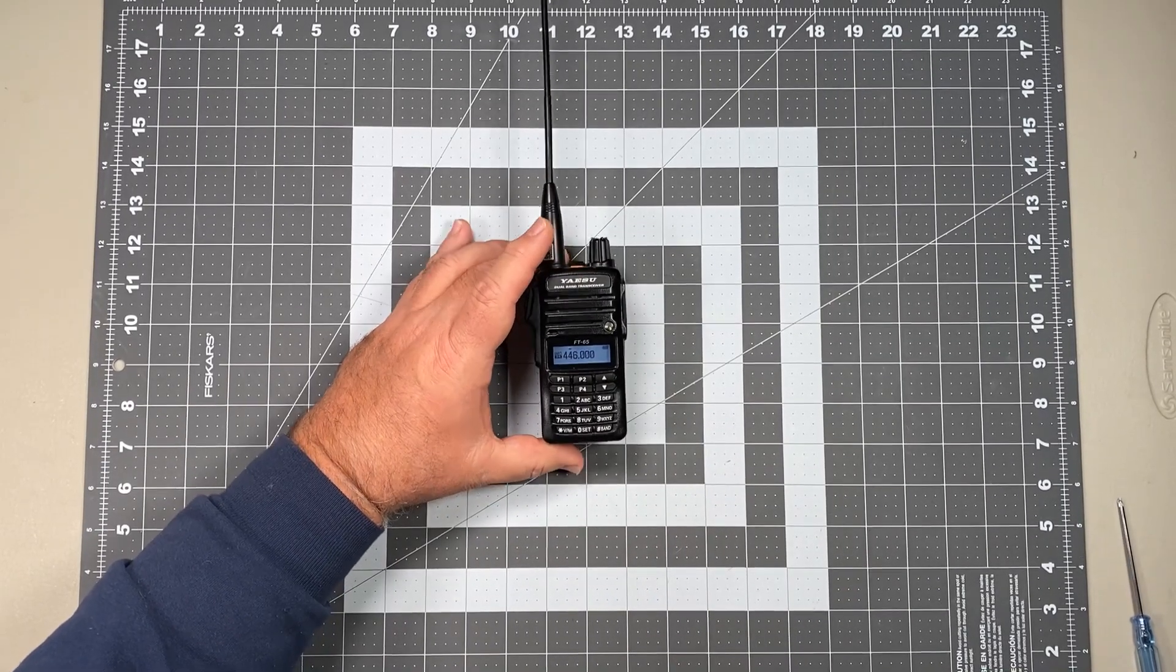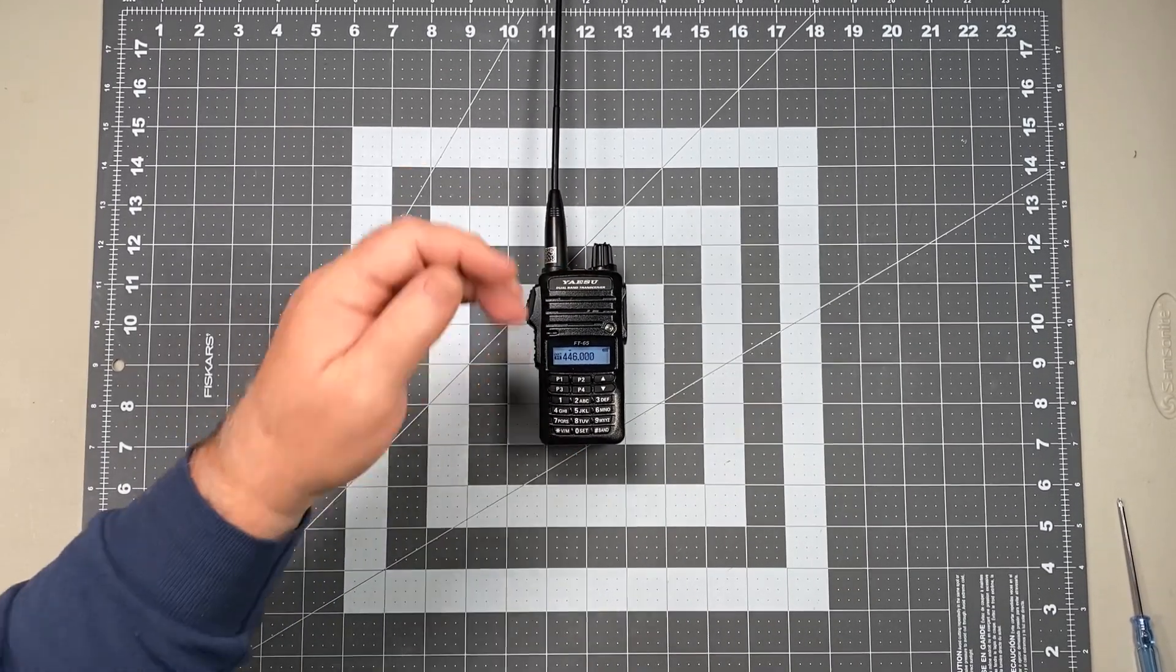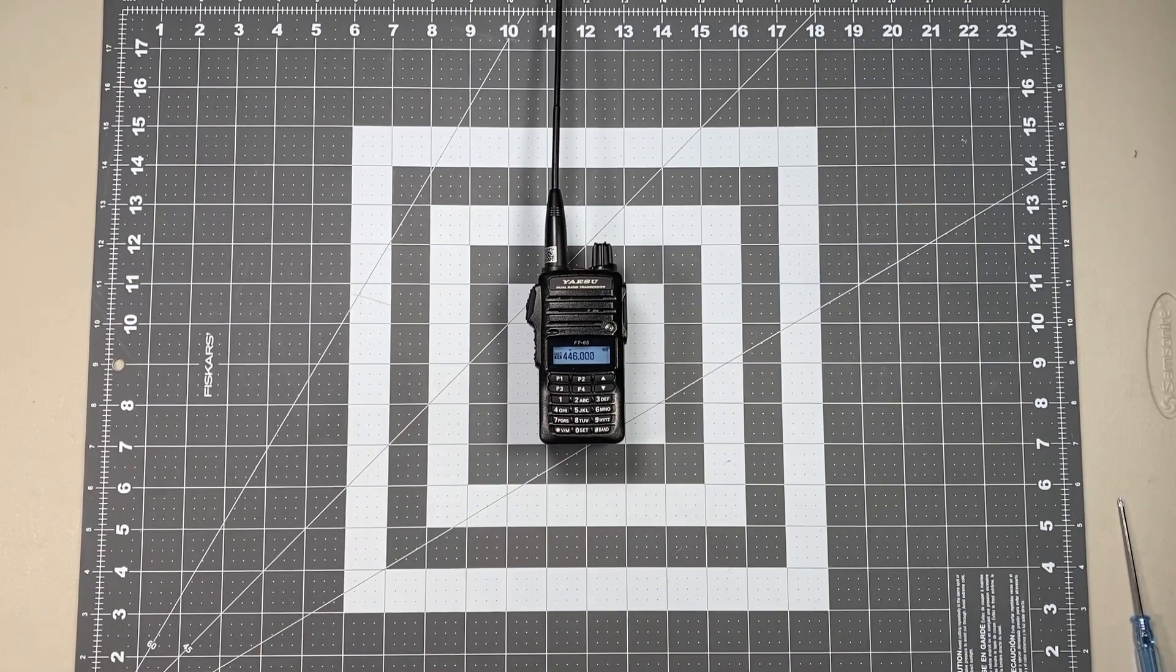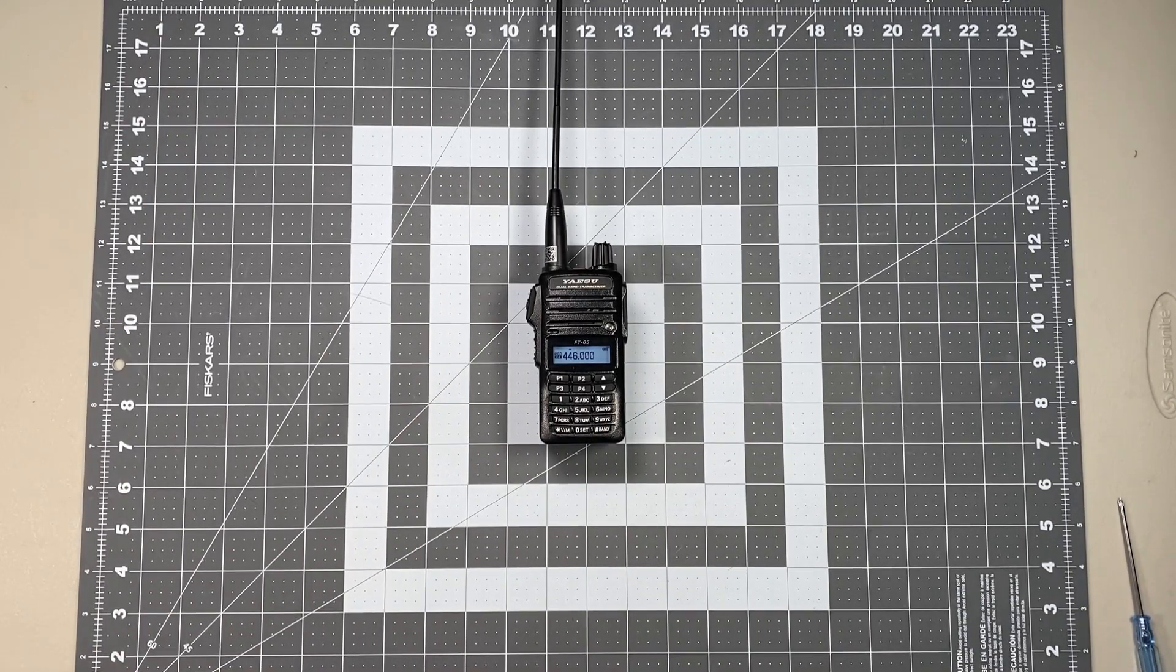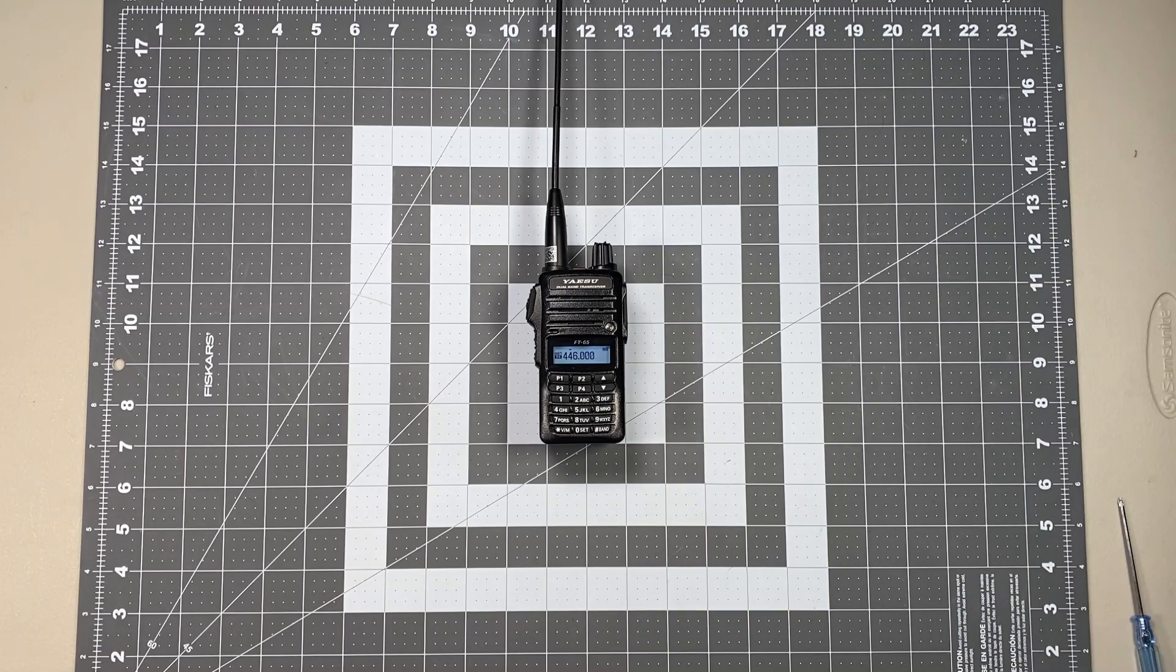And next we'll move on and we'll start working on how to program in a repeater. But for now, this is programming in a simplex memory channel. Thank you for watching and or listening. This is Scott, Kilo CR6 Delta Alpha Yankee in Southwest Visalia, California. Have a nice day.